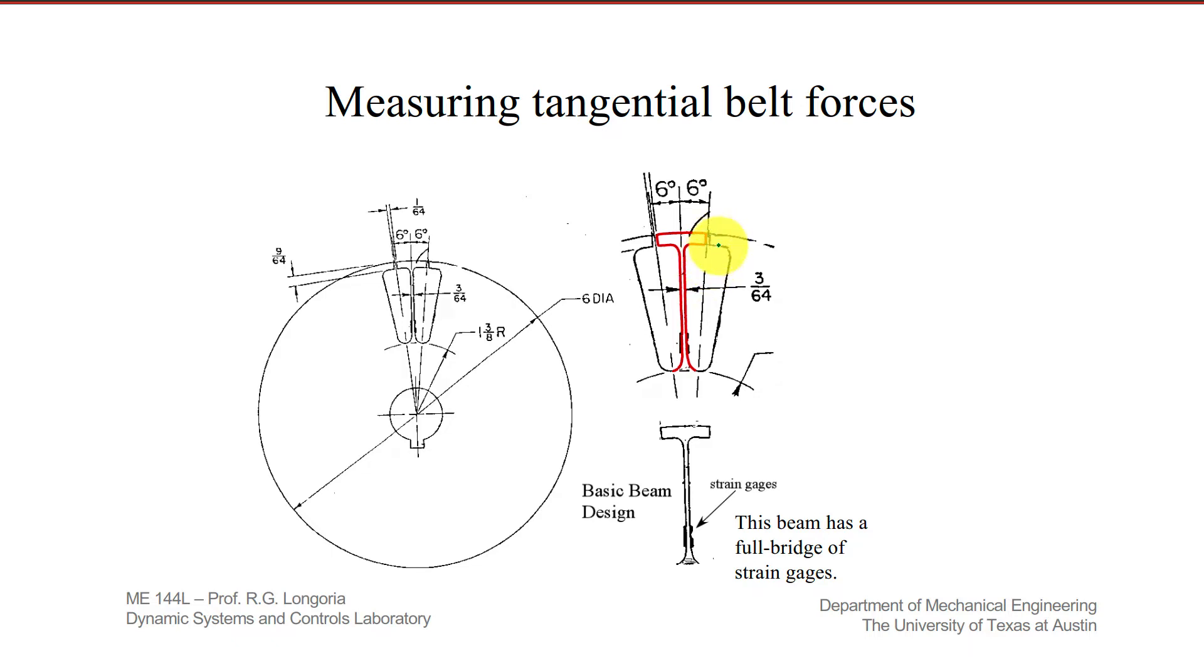What this student did was they designed, as you can see, a little cutout. So this has a beam type configuration cut out into this disk. This is probably about a one-inch disk, and so this little beam sits by itself inside that segment, right? Like that, so it can deflect, and then it kind of comes up like that.